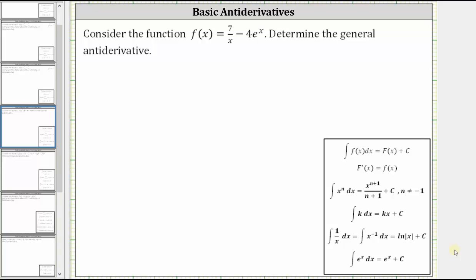We're asked to consider the given function and determine the general antiderivative. The general antiderivative is big F of X plus C, where C is a constant, and the derivative of big F of X equals the given function f(x), which means we need to determine the indefinite integral of the given function f(x).